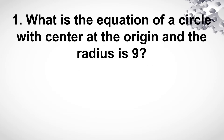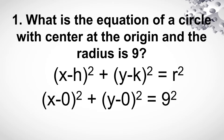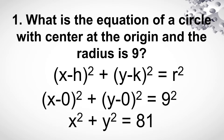What is the equation of a circle with center at the origin and the radius is 9? Remember that if your center is at the origin, the coordinate is (0, 0). So if you use the equation of a circle, your h and k will be 0, 0 and your radius 9 will be raised to the second power. So the equation of the circle is x squared plus y squared is equal to 81.